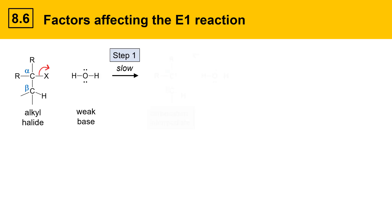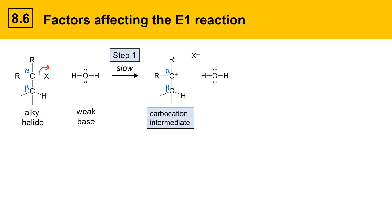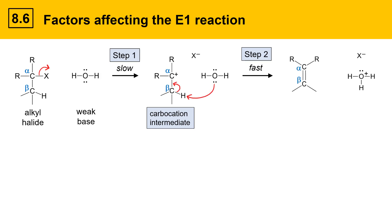In the first step — the slow step — the leaving group leaves and that generates a carbocation intermediate. Then in the second step — the fast step — the weak base deprotonates the beta position to give an alkene product which has a double bond between the alpha position and the beta position. The other products are a conjugate acid and the leaving group.